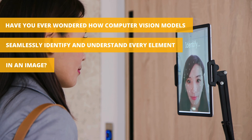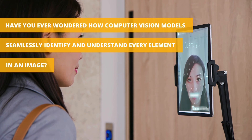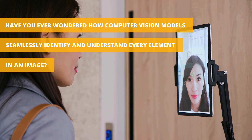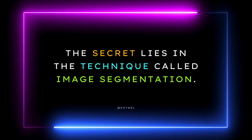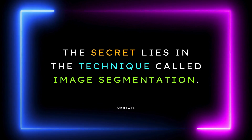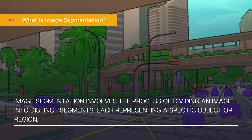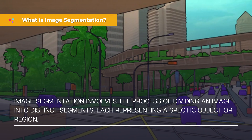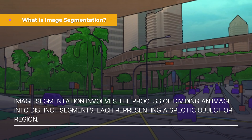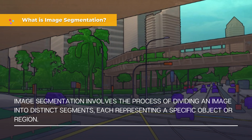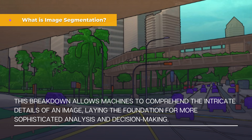Have you ever wondered how computer vision models seamlessly identify and understand every element in an image? The secret lies in a technique called image segmentation. Image segmentation involves the process of dividing an image into distinct segments, each representing a specific object or region. This breakdown allows machines to comprehend the intricate details of an image, laying the foundation for more sophisticated analysis and decision making.